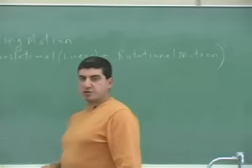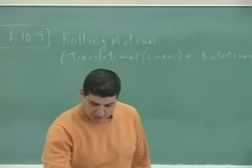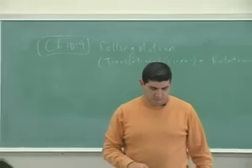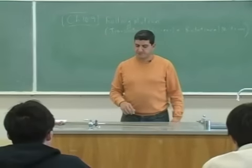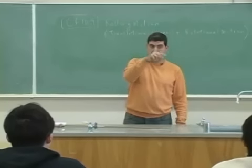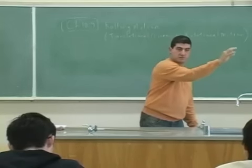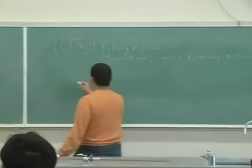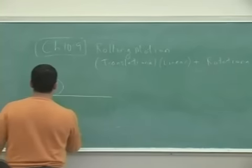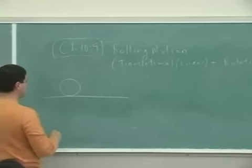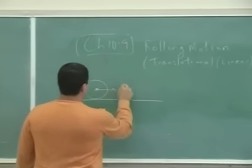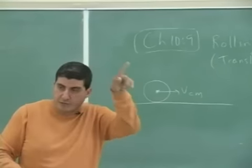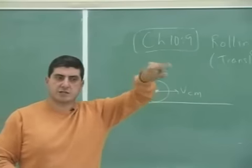So when an object is rolling — let's say this chalk here — it's rotating plus the center of mass of it is translating. So that's a combination of the two. The center of mass goes forward, plus each point along the perimeter of the object has a tangential velocity.